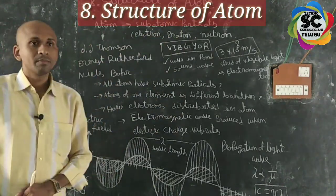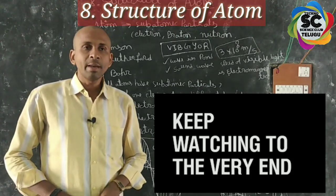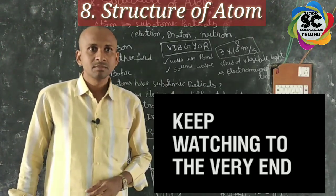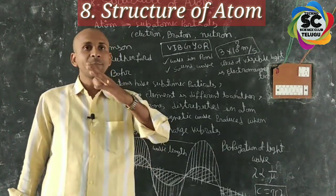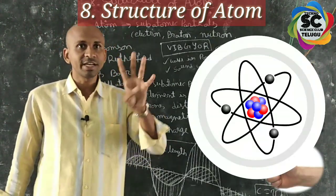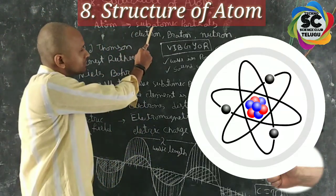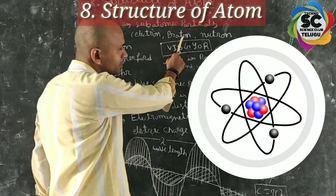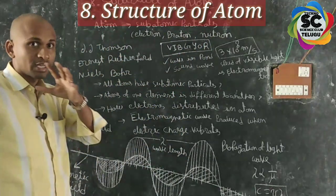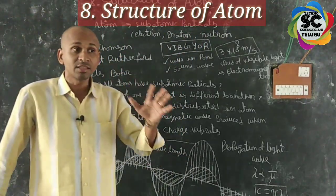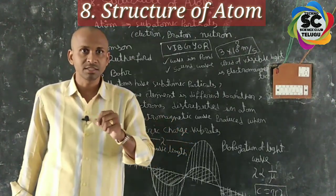Structure of Atom. In 9th class, you learned about atoms. Three types of subatomic particles are present in the atom: electrons, protons, and neutrons. These basic things were all covered in 9th class.